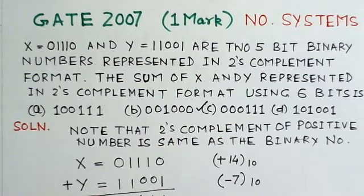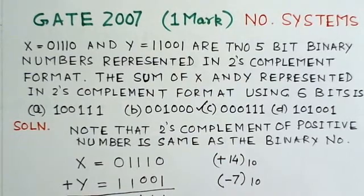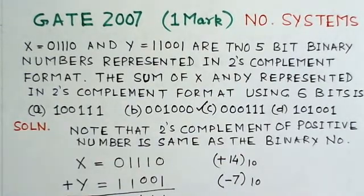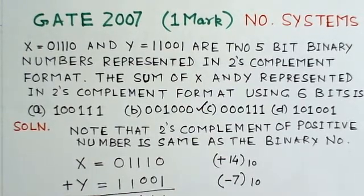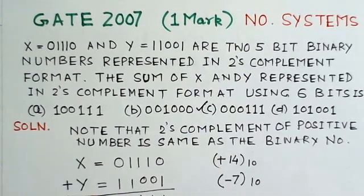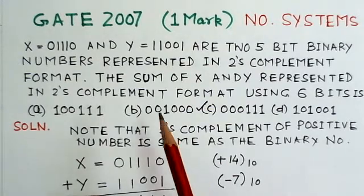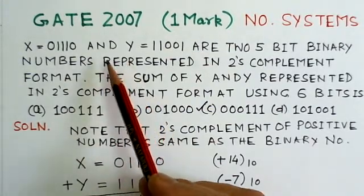On number systems and codes, two typical GATE problems have been identified for video solutions. The first problem is from GATE 2007. It is based on 2's complement addition. Sign bit extension method is used to get the requisite number of bits in the result. So we see this problem from GATE 2007.